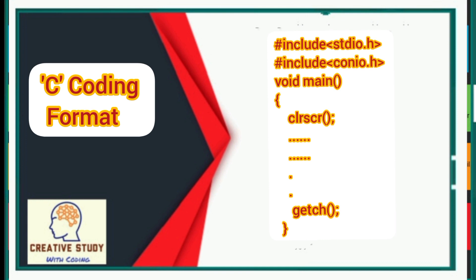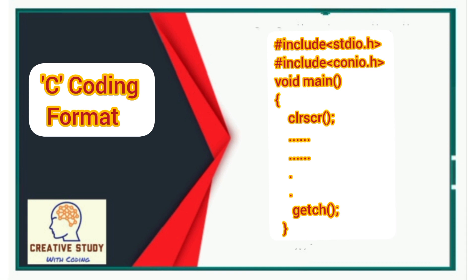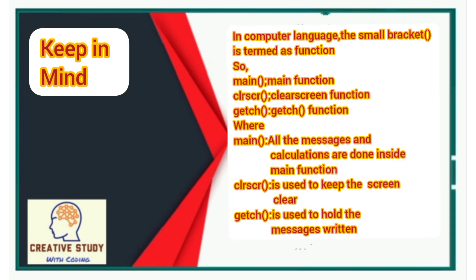This is the format which you have to follow each time during code writing. In computer language, the small bracket is termed as a function. These are read as main function, clrscr function, and getch function, where all the messages and calculations are done inside the main function. Clrscr is used to clear the screen, and getch is used to hold the messages written.